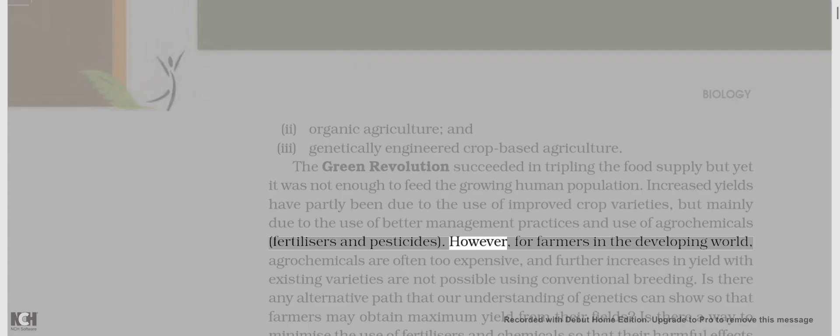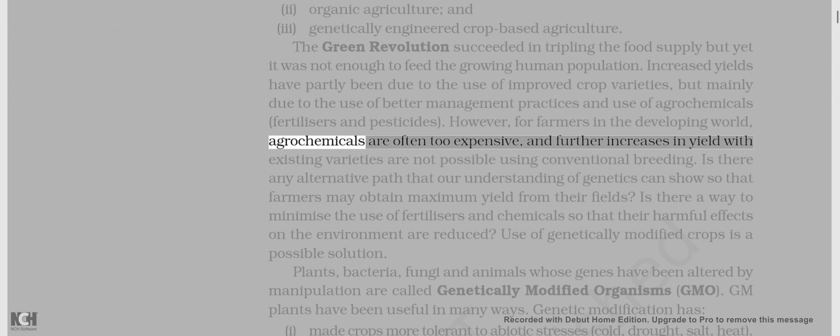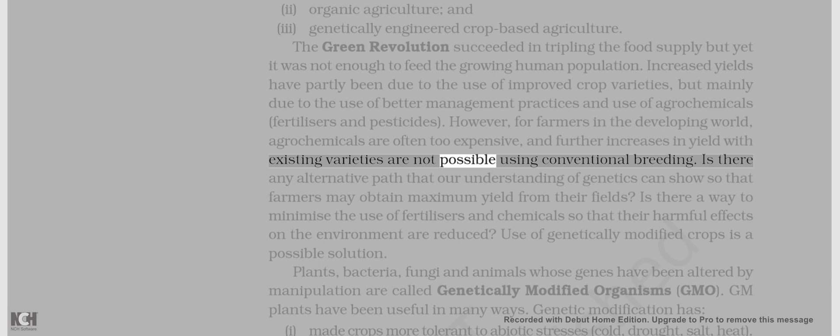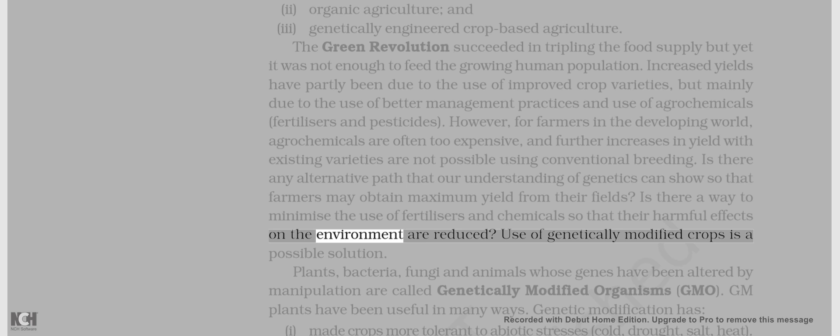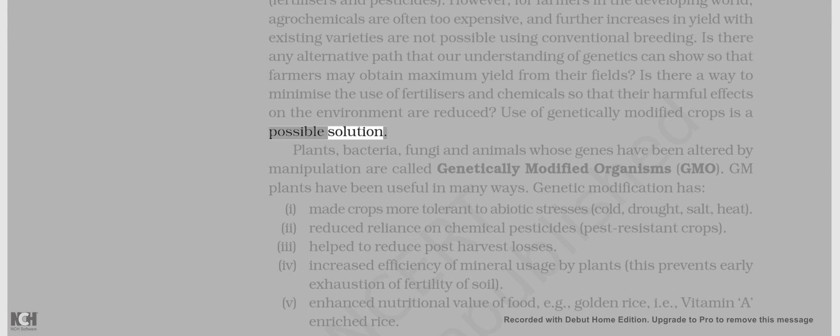However, for farmers in the developing world, agrochemicals are often too expensive, and further increases in yield with existing varieties are not possible using conventional breeding. Is there any alternative path that our understanding of genetics can show so that farmers may obtain maximum yield from their fields? Is there a way to minimize the use of fertilizers and chemicals so that their harmful effects on the environment are reduced? Use of genetically modified crops is a possible solution.